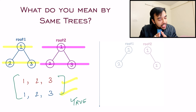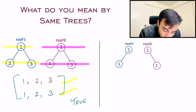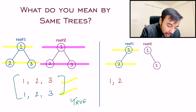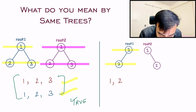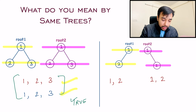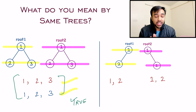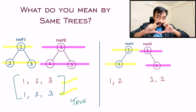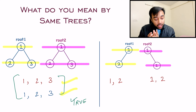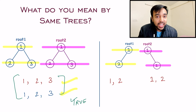But think about it — even if two trees have different structures, they can have the same level order traversal. For example, consider two sample trees where a level order traversal of the first tree gives one and then two, and a level order traversal of the second tree also gives one and then two. You might feel that both trees are the same, but no — you can see that these two trees are not the same. So traversals like post-order or pre-order can give you a false positive. That means even though the traversal result is the same, the trees might not be the same.